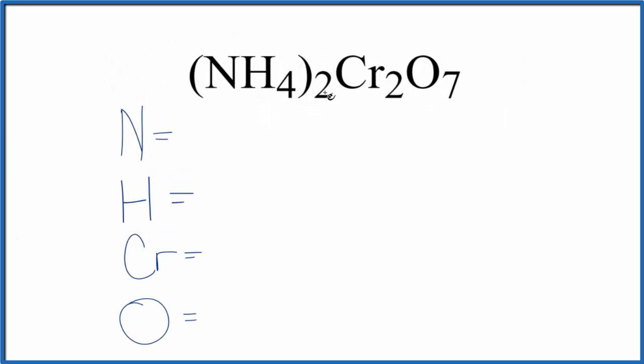So the thing to remember here is that when we have a 2 outside of parentheses like this, the 2 goes to everything. We multiply the 2 by everything in parentheses.